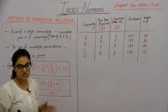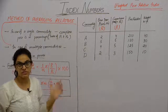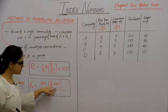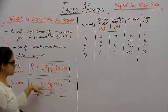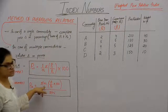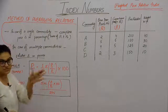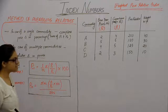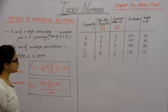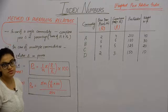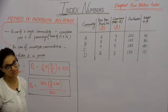The price relative shows the relative change in prices over the base period and the current period. If you take the price relative and multiply it by the weightage and then divide by the submission of total weights for every different term, what you get is the weighted price relative index.